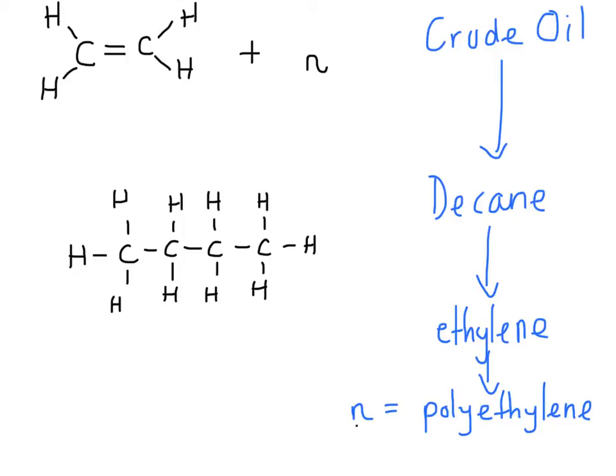So over here we have a picture of ethene, and we know that ethene is its IUPAC name, and its common name is ethylene. And when we take ethene and plus it with any number of ethenes, and that's what the little n stands for, which just means number of, we can create long chains and we call these polyethylene.